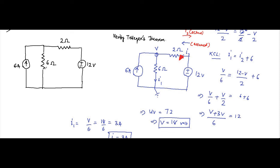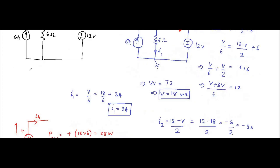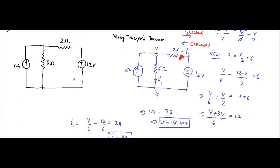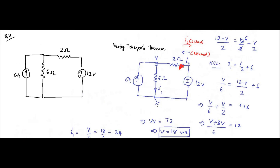It is interesting to note that the current source is supplying power while the voltage source is absorbing power. This is the fourth question related to Tellegen's theorem, and it introduces a current source alongside a voltage source as a different approach. I hope you liked this video — please subscribe to my channel Engineering Tutorial for more videos related to engineering, science, and technology. Have a great day, thank you very much.